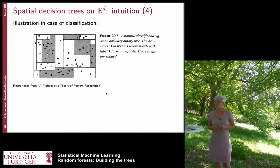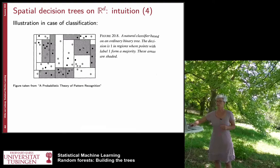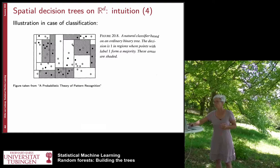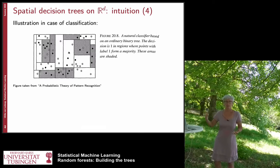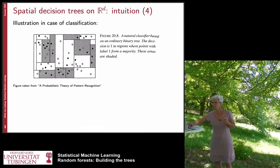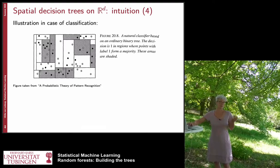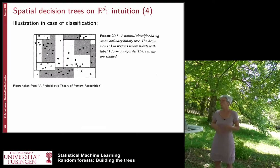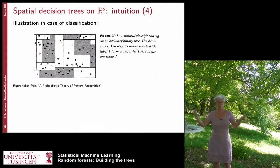Here is an illustration for classification. You have spatial cells with white or black labeled points. The cell color indicates the prediction: if a cell has three white points, any test point landing there is predicted white. If a cell has three black and two white points, the majority is black, so every test point in that cell gets a black label. This is a simple, straightforward data structure with nothing mysterious about it.